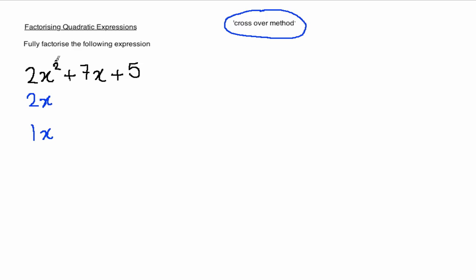The second thing to do is to look at the numerical part of the expression, the 5, and think of two numbers that multiply to give you 5. Here once again, nice and easy because it's a prime number, it can only be a 5 and a 1.